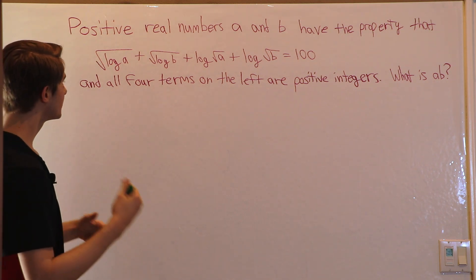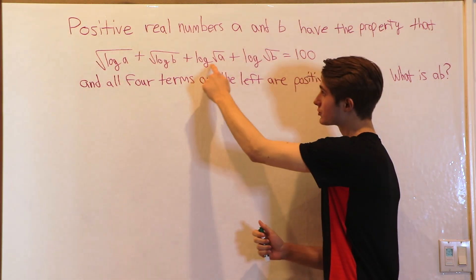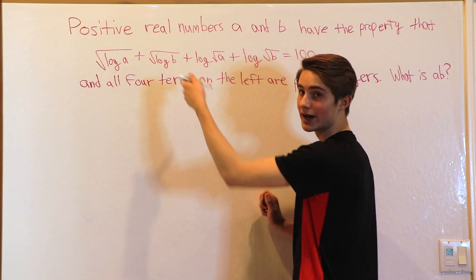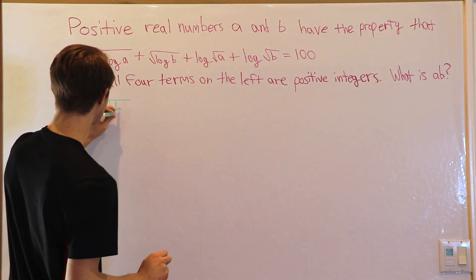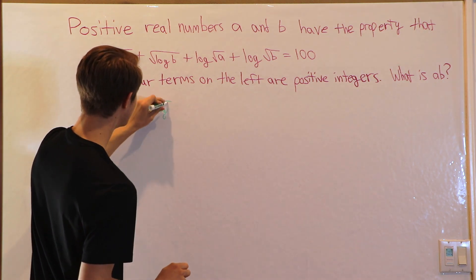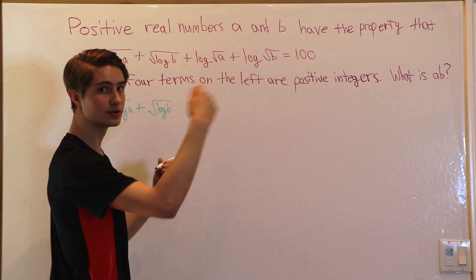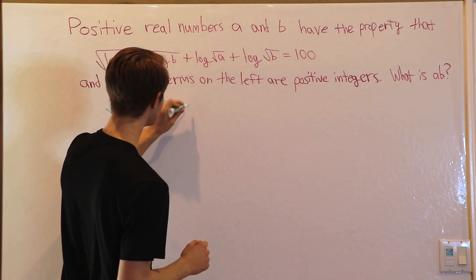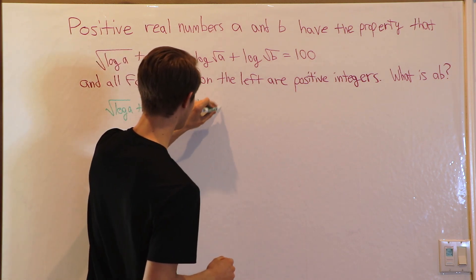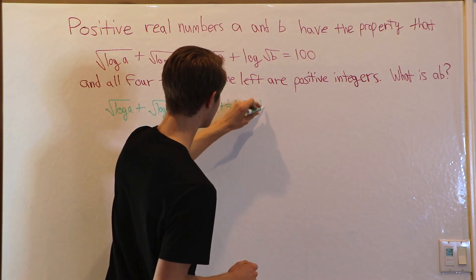I don't really know where we can start this problem at first, but what I do see is this log square root A. I know that we can write that as A to the 1 half power. So we could rewrite this equation as square root log A plus square root log B, and then log of B to the 1 half, which means we can pull out the 1 half power. So we have 1 half log A plus 1 half log B equals 100.